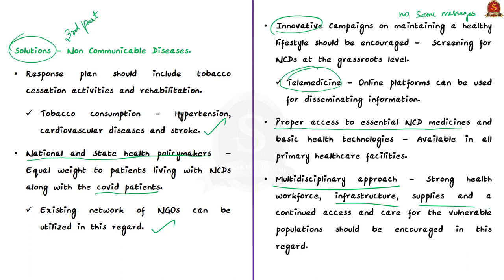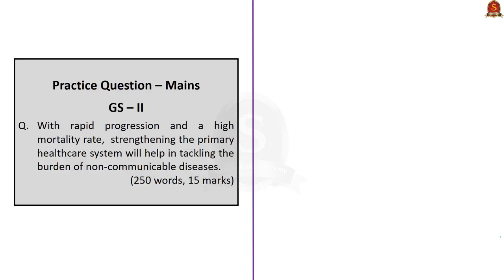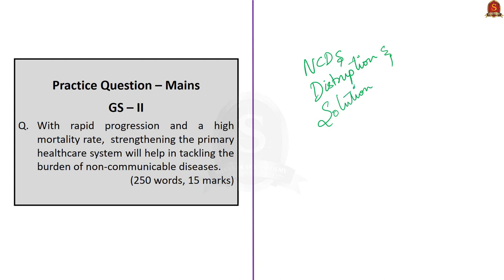A multidisciplinary approach that includes a strong health workforce, infrastructure, supplies, and continued access and care for vulnerable populations should be encouraged. In this discussion, we saw about non-communicable diseases, why there was disruption in services for NCDs, and how we can overcome these disruptions. Now let us move on to the next part of our discussion.